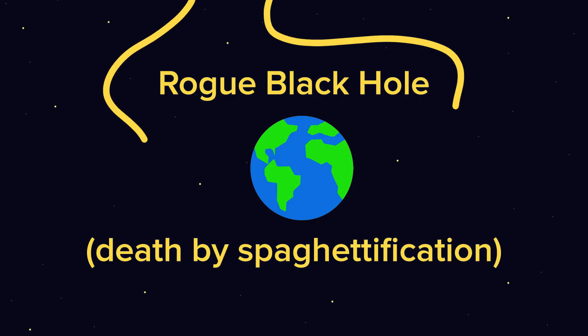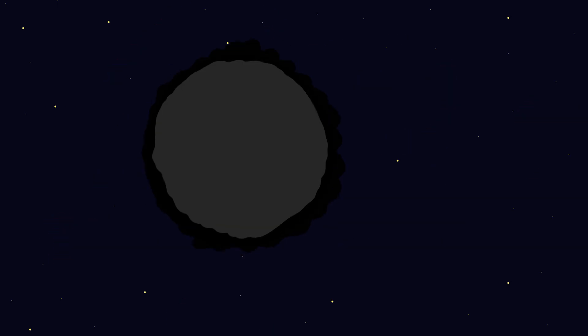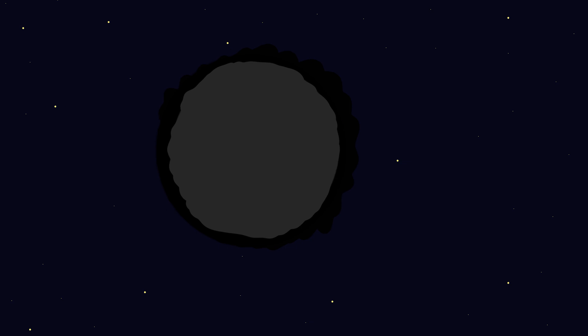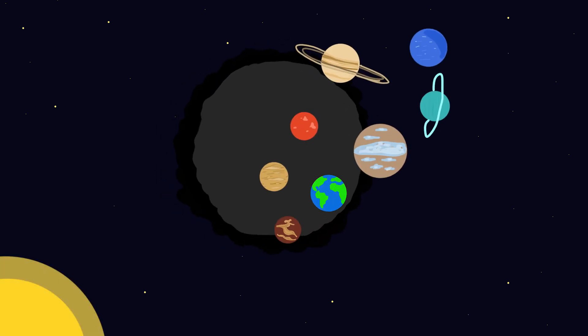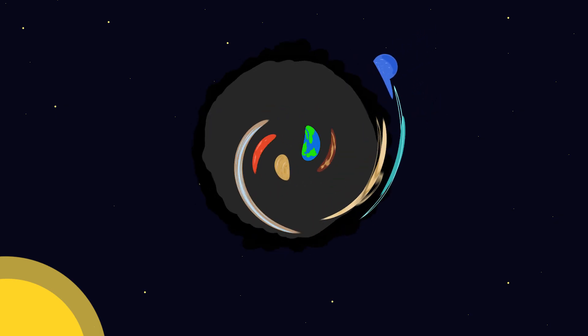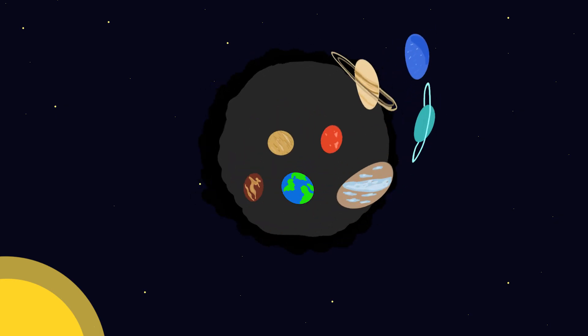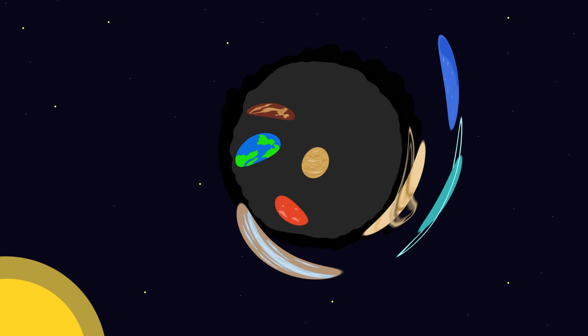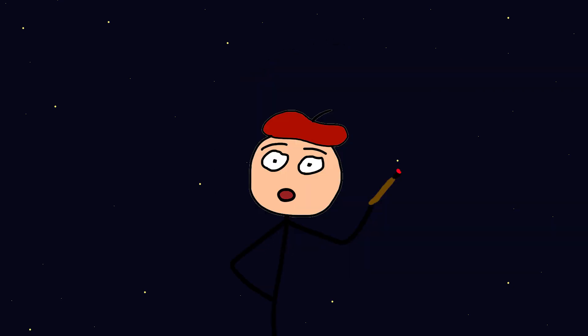Rogue Black Hole, Death by Spaghettification. Imagine a rogue black hole that drifts aimlessly throughout the universe. If it passed close enough to our solar system, it wouldn't suck you in like a vacuum cleaner. Instead, its gravity would distort orbits, and depending on how close it gets to Earth, even distort you.